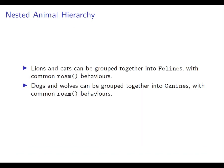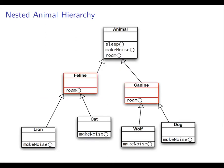We could however create ourselves a nested hierarchy. We could group together lions and cats as felines, and dogs and wolves as canines. We could observe that felines and canines have systematically different Roam behaviors, and so we could implement Roam at the intermediate level in the feline and canine class.